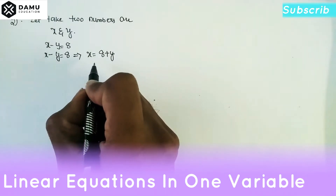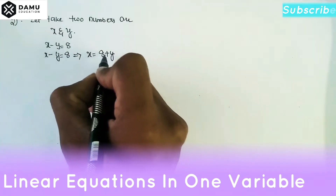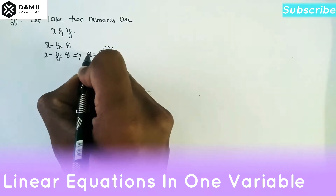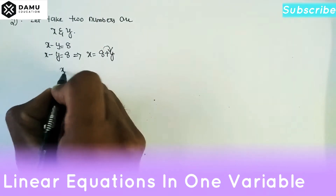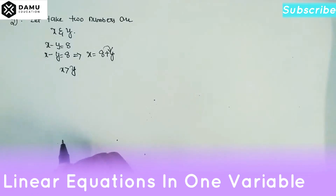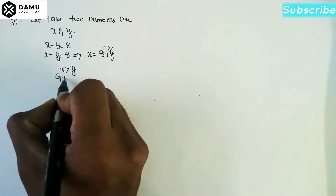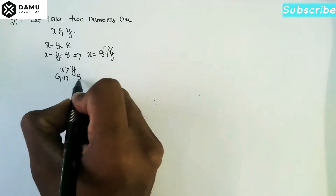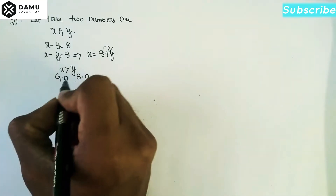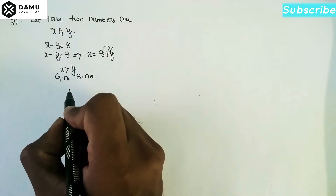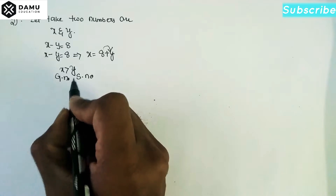So 8 plus y means if you add 8 to y, you get x. This tells us x is greater than y — x is the greater number and y is the smaller number. This is a linear equation in one variable.